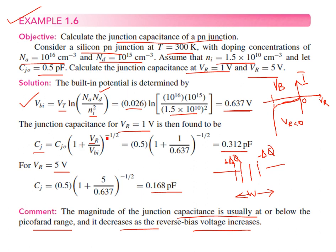The important thing about PN junction diodes is the junction capacitance — these devices don't have instant switching because of it. This junction capacitance is a function of the reverse bias voltage, which you cannot increase indefinitely without burning out the device. In reverse bias, there is no current because of the widening of the space-charge region, and the junction capacitance decreases with increasing reverse bias magnitude.